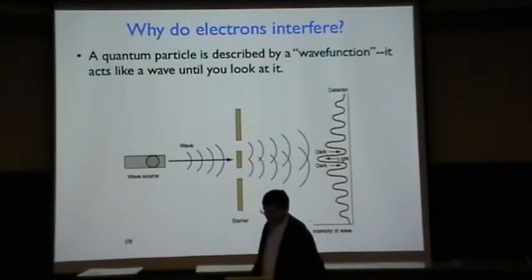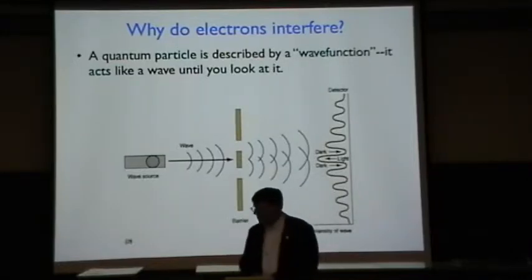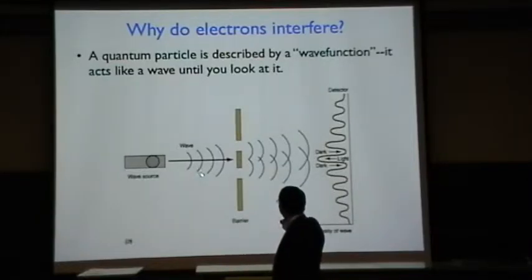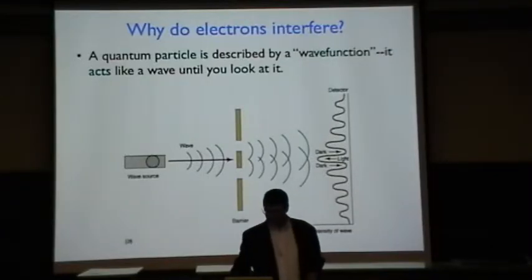So why do the electrons interfere to make this interference pattern? Well, it turns out that a quantum particle is described by something that's called a wave function. It's got a wave in the word. It's like a wave. And strangely enough, it acts like a wave until you look at it. Things start getting even stranger. We think this is just a little picture showing, okay, it looks like a wave. It does the interference pattern, except that we're saying that it's electrons that do this.